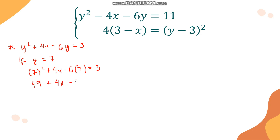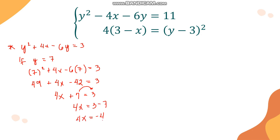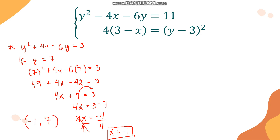Now we solve for x using the expanded equation 2: y squared plus 4x minus 6y equals 3. For y equals 7: 49 plus 4x minus 42 equals 3, giving 4x plus 7 equals 3, so 4x equals negative 4, therefore x equals negative 1.